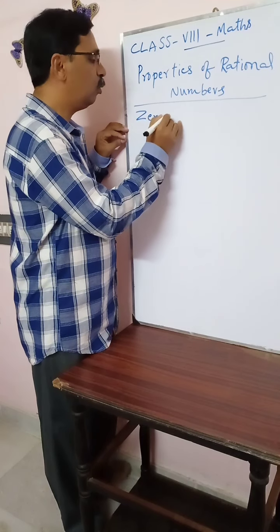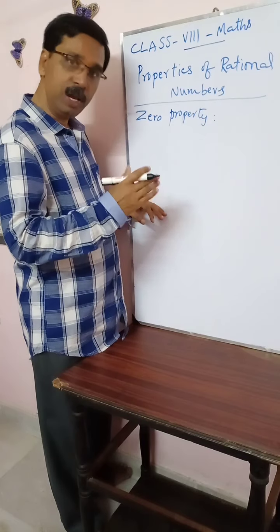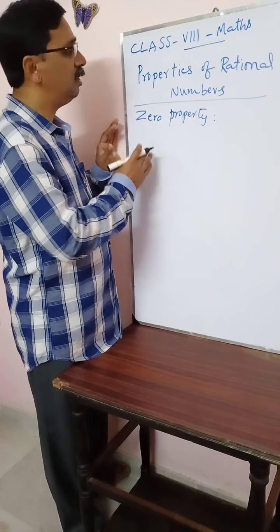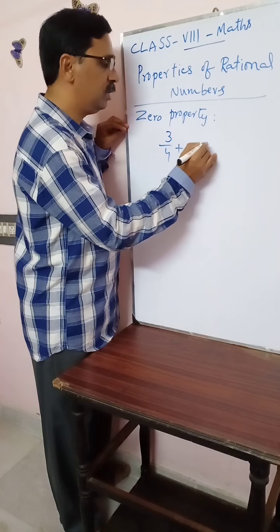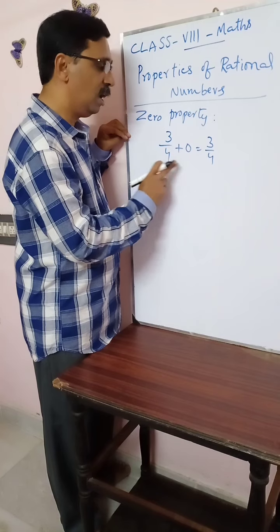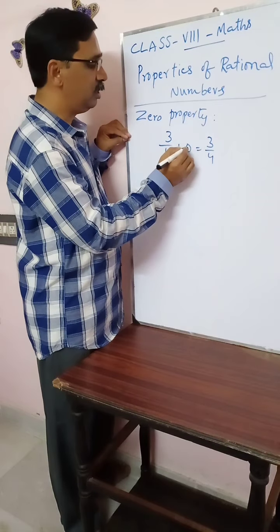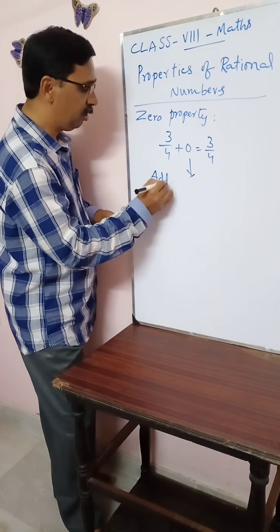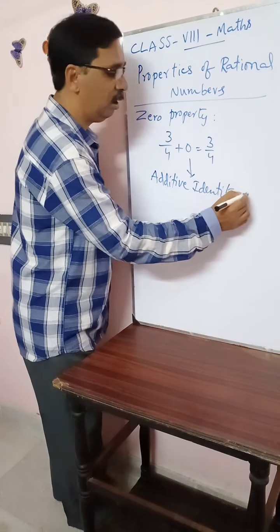Now, zero property or role of zero. What is this zero property? When we add zero to any number — whether it is a natural number, a whole number, or a rational number — the result is the same number. For example, 3/4 plus zero is equal to 3/4. That means zero is not affecting the result. Therefore, zero is called the additive identity for rational numbers.